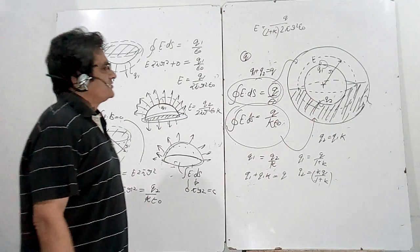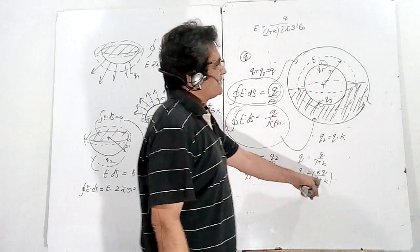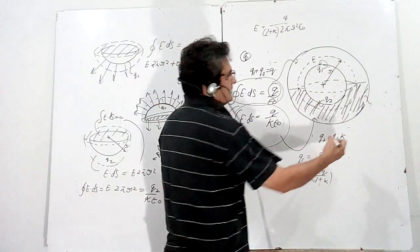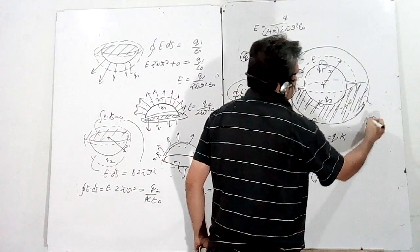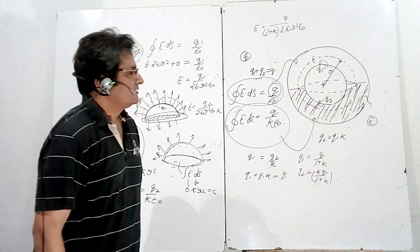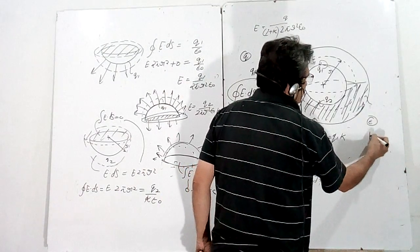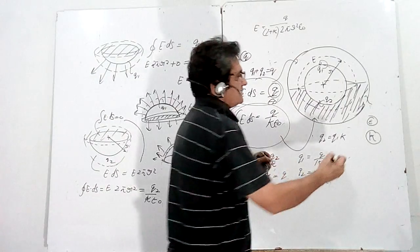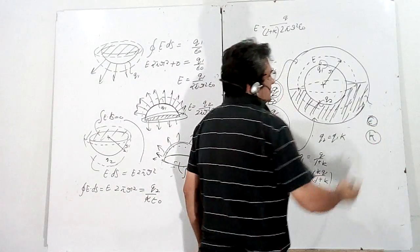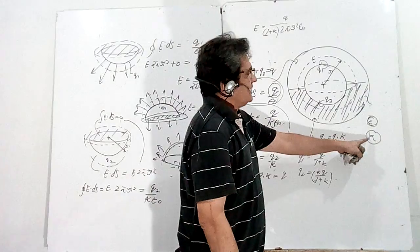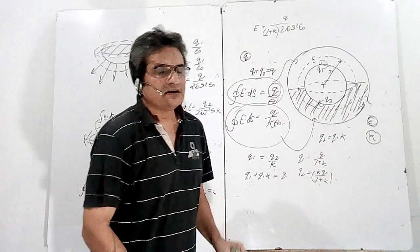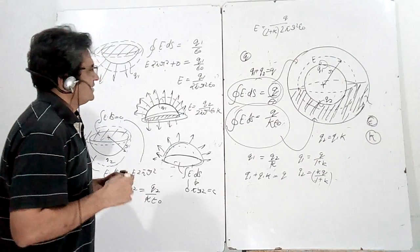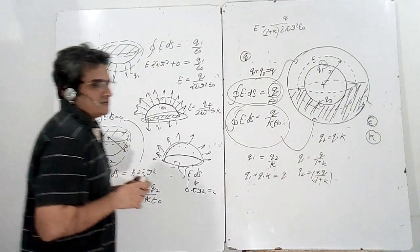One clarification I should mention: K is the dielectric constant, which is the same as relative permittivity. In Irodov's book, the relative permittivity is written as ε (epsilon). We are using K to denote the same quantity — dielectric constant equals relative permittivity — that is why K has been used throughout this solution.